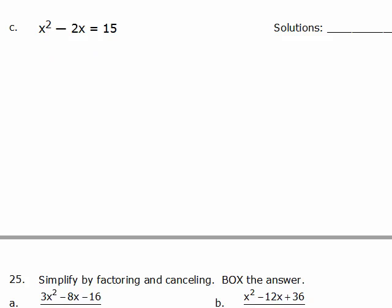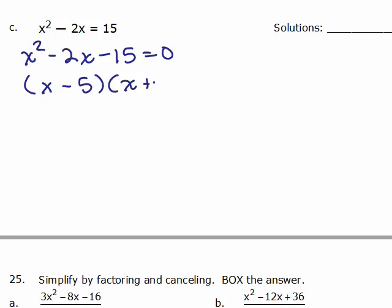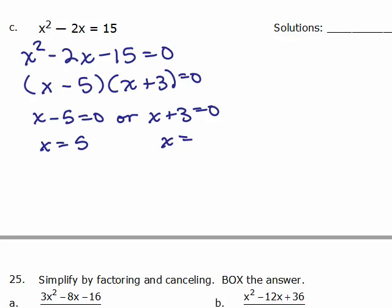So, we've got, again, not equal to 0, so what you want to do is set the equation equal to 0, and then factor it, so either the first factor is 0, or the second factor is 0, that's how we get 2 different solutions, 5 or negative 3. Okay, now, let's check these.